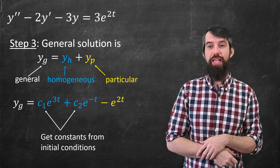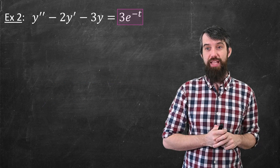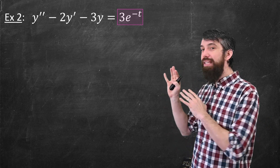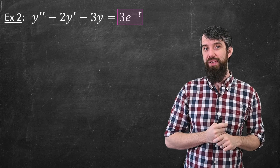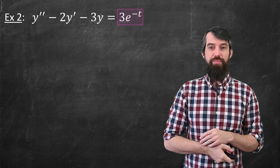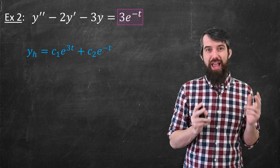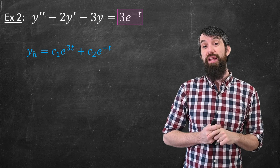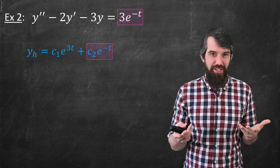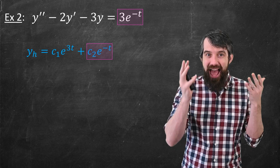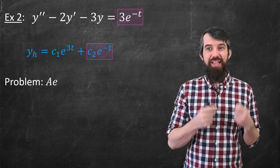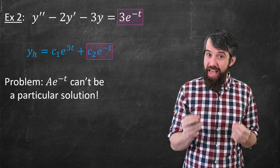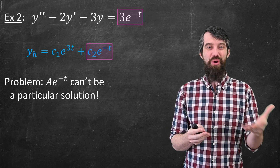Let's do one more example. This is almost the same as the first — the left-hand side is identical, but the right side is 3e to the minus t instead of 3e to the 2t. The homogeneous hasn't changed, so we can quote that again. But notice: e to the minus t appears in the non-homogeneity, and e to the minus t is also in the homogeneous solution. So a guess of the form a constant times e to the minus t cannot work — it would just add up to zero.